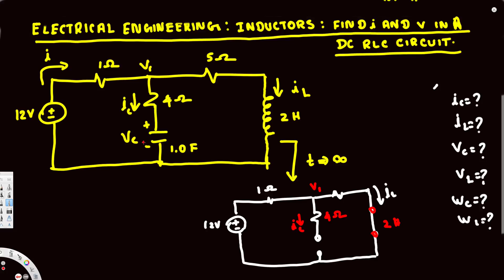Here we have 4 ohm, IC going through it, V1, and 1 microfarad capacitor, with VC across it. Now let's find them one by one. First, the question asks to find the current across the capacitor. Since the capacitor is open, there is no current flow, so IC is equal to 0.